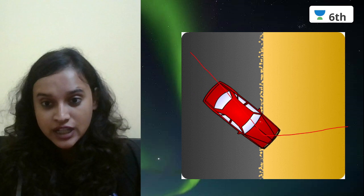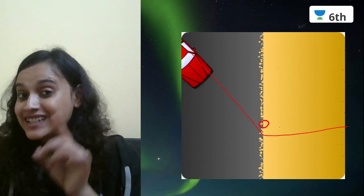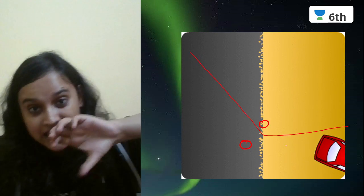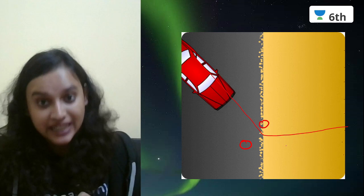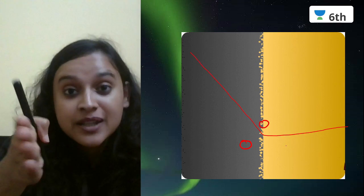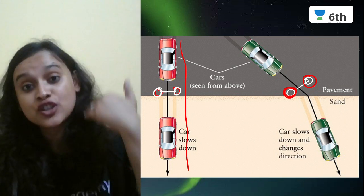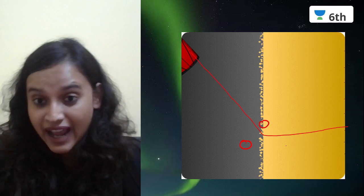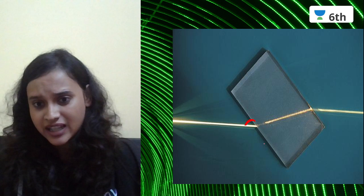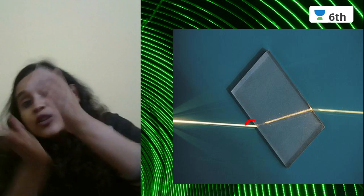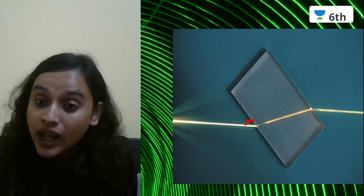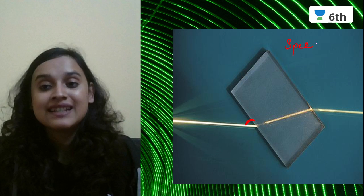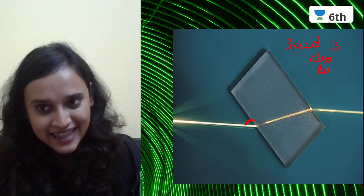Look at this GIF of the car — can you see it changing direction? This front wheel has already hit the sand while the other hasn't touched yet, and so the car skids — just like a car skidding in mud. In the same way, when light comes straight there's no direction change, just slowing. But when light comes at an angle, it bends and goes into another direction, and its speed is also less.